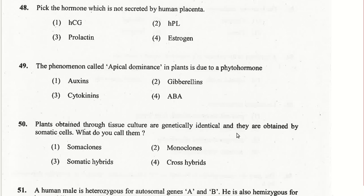Plants obtained through tissue culture are genetically identical and obtained from somatic cells. They are called soma clones, since they are genetically identical and derived from non-reproductive somatic cells.